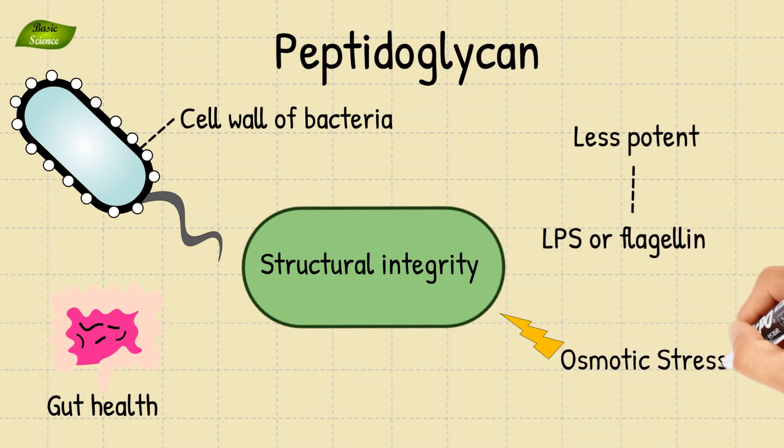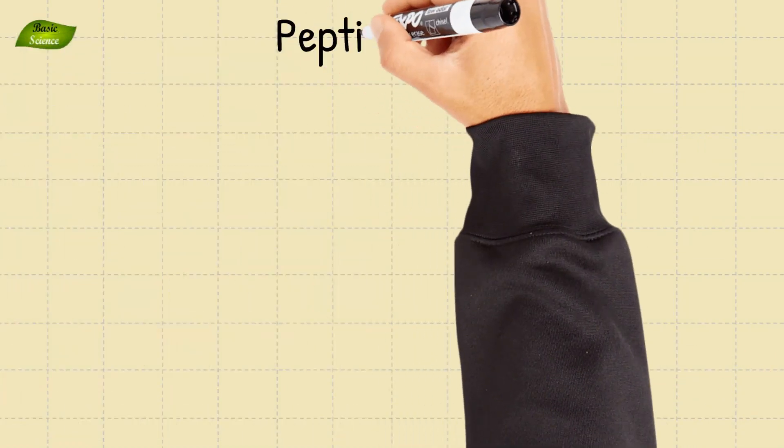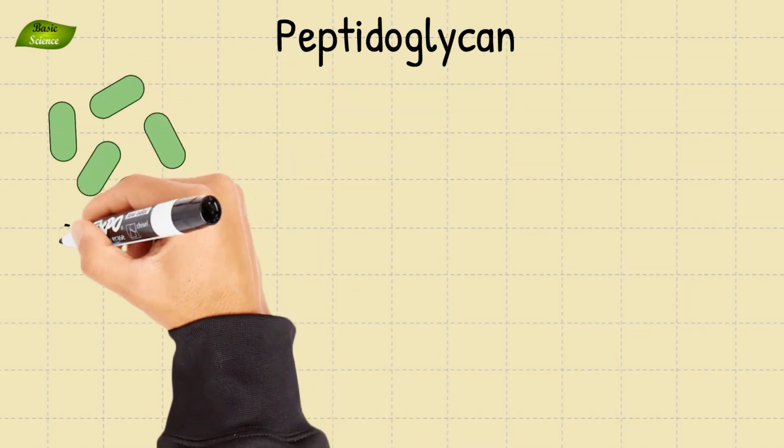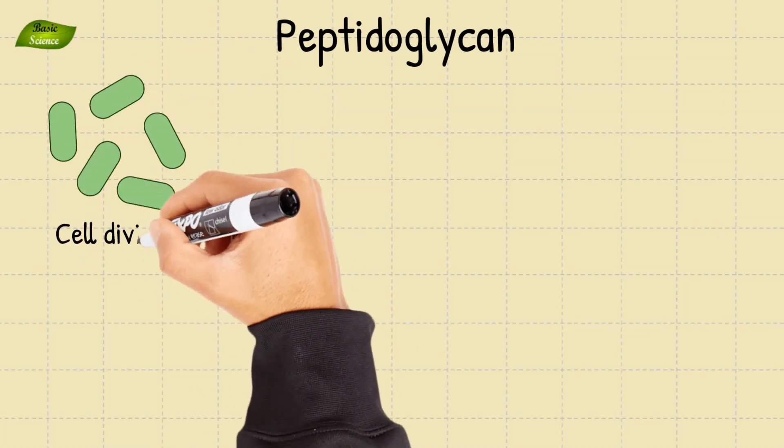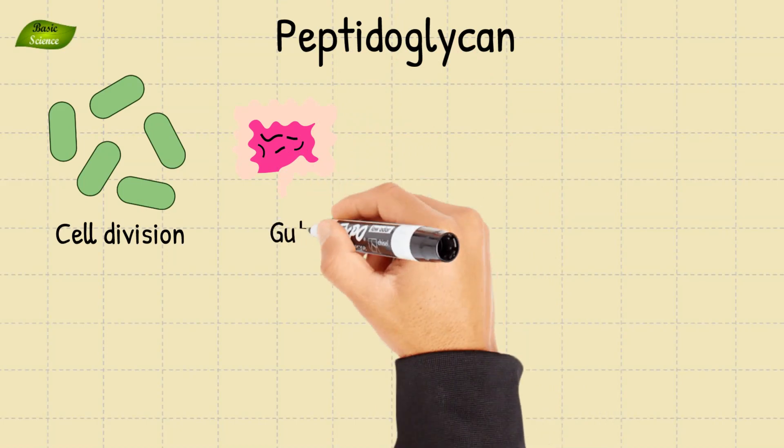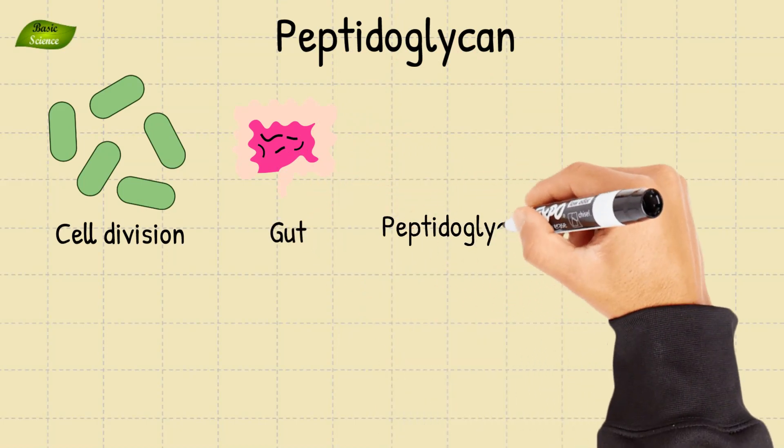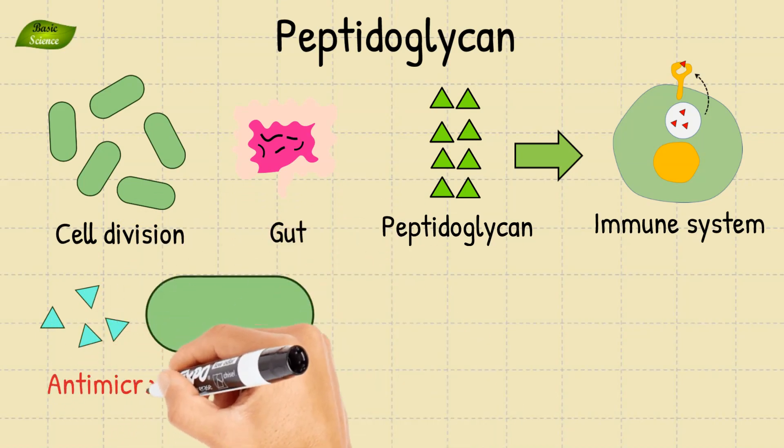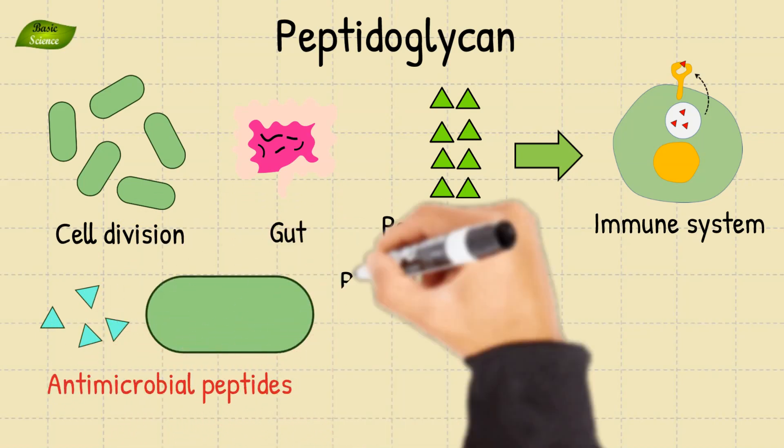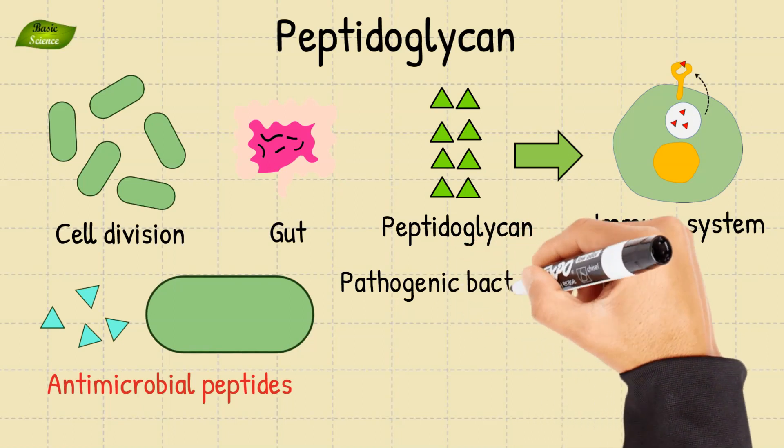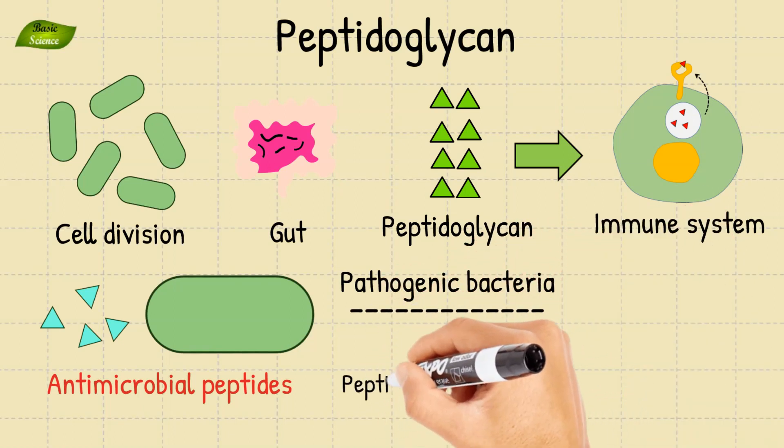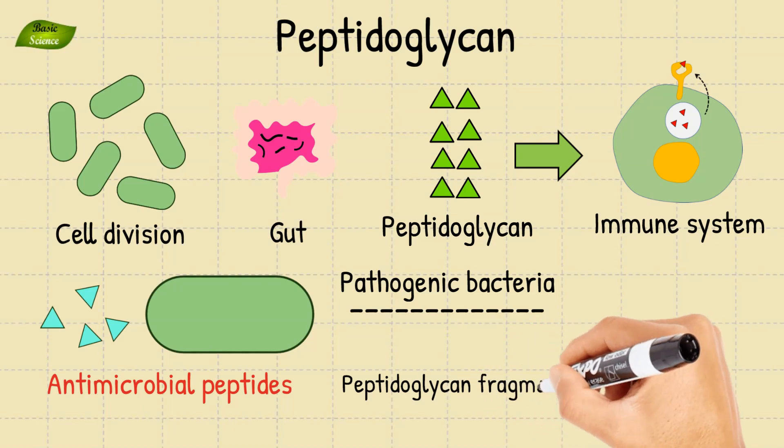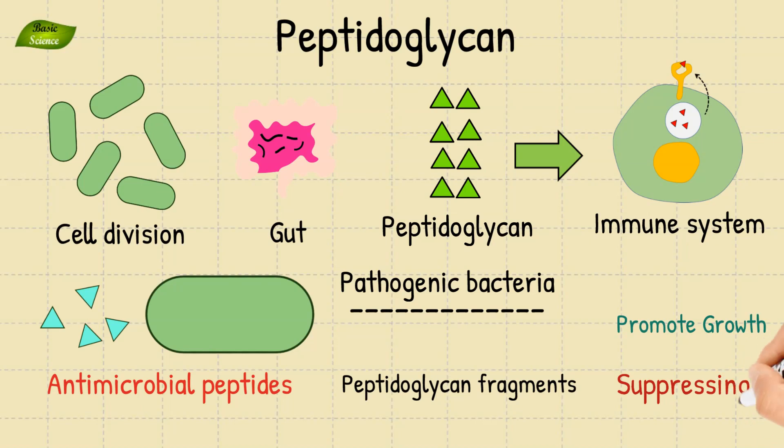Peptidoglycan also facilitates cell division and shape determination of bacteria. In the gut, peptidoglycan interacts with the host immune system, prompting the production of antimicrobial peptides and other immune factors, aiding in the defense against pathogenic bacteria. Additionally, peptidoglycan fragments can modulate the gut microbiome, promoting the growth of beneficial bacteria and suppressing the growth of harmful ones.